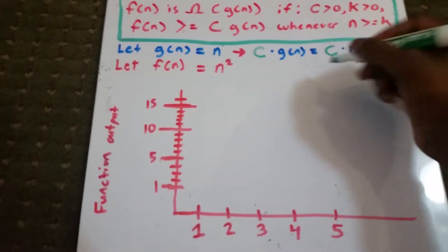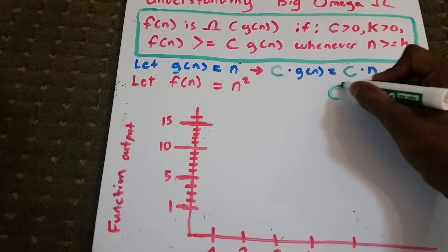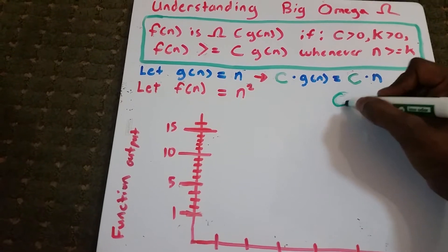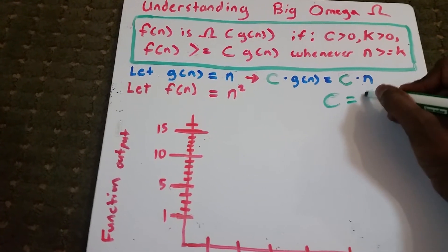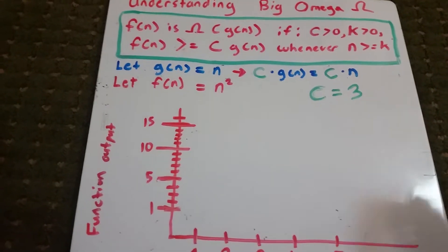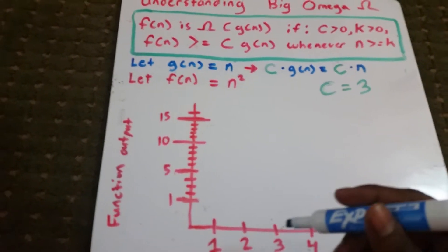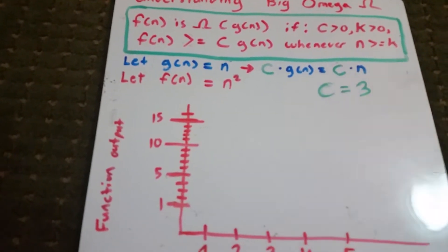So what's c, right? I'm going to let our constant c, we could choose any value, it's going to be equal to 3. Okay, so I'm going to go ahead and graph our c times g of n, so that's 3 times n in this case.